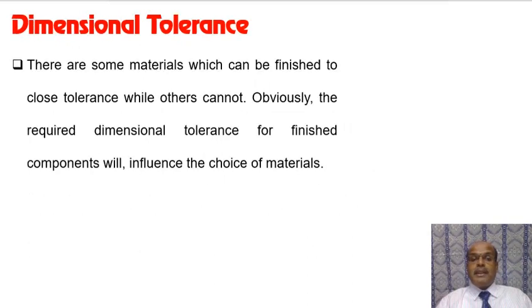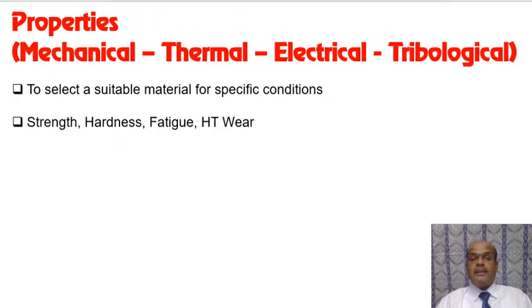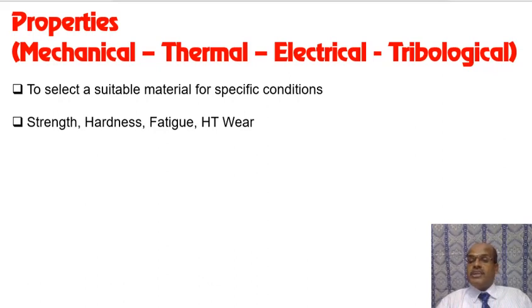Dimensional tolerance is important because some materials can be machined or fabricated to the closest tolerance, while others like cast iron have a tolerance of 1 mm, and plastics can achieve micron-level tolerances. Key properties include mechanical properties (hardness, density, impact strength), thermal properties (thermal conductivity, coefficient of thermal expansion), electrical properties (electrical conductance), and tribological properties (coefficient of friction and specific wear rate).